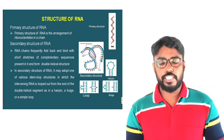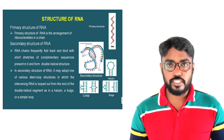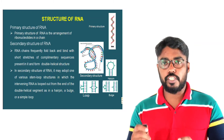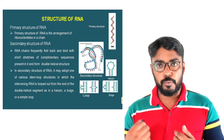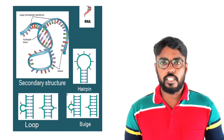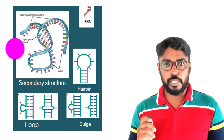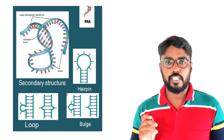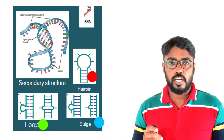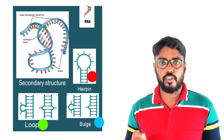In the secondary structure, the RNA chain folds back and complementary strands bind to form a double helical structure. RNA adopts one of various stem-loop structures, in which non-complementary or intervening sequences are looped out from the double helical region, forming hairpin loops, bulges, or internal loops. As you can see in this figure, this is the secondary structure of RNA, showing complementary strands forming a double helix with different loops and bulges.